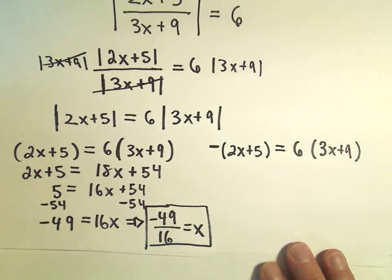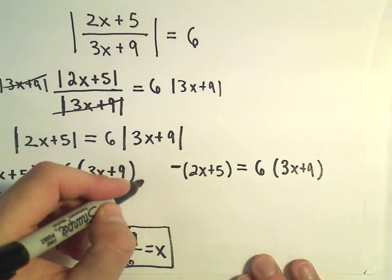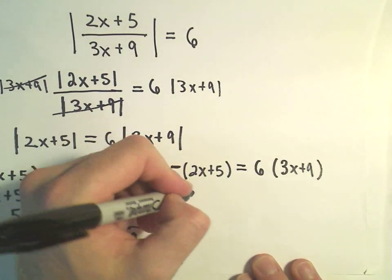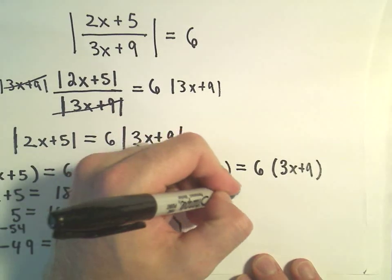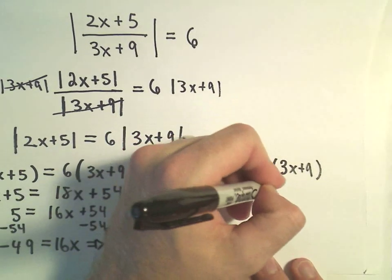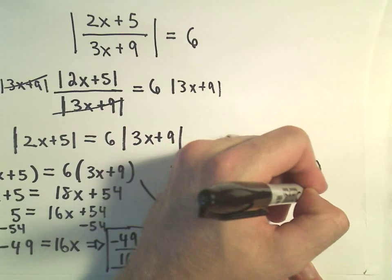To do the other solution, we're just going to do the same thing. The first thing I would do is distribute my negative. So I'll get negative 2x minus 5 equals 18x, again, plus 54.